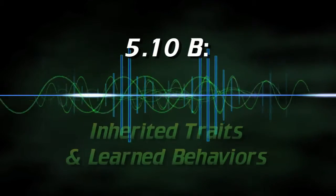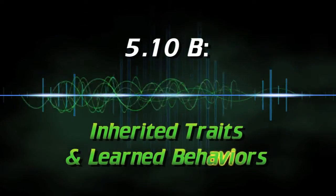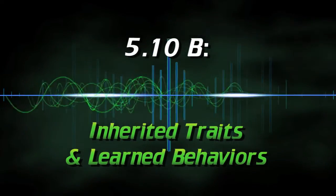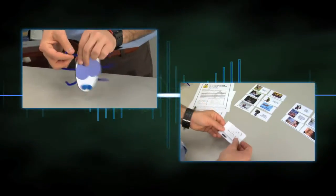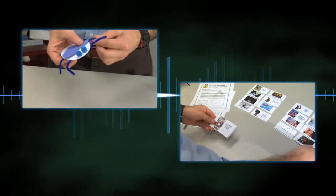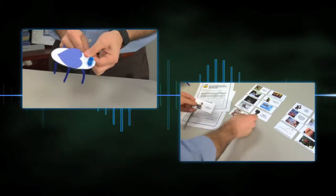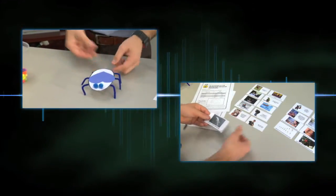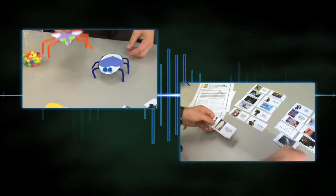5.10b Inherited Traits and Learned Behaviors. In this activity, students assemble insects in order to illustrate how traits are passed from parent to offspring, and sort picture cards into groups to identify inherited traits and learned behaviors.